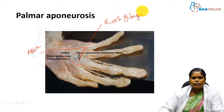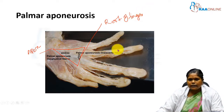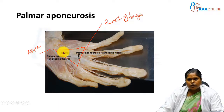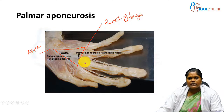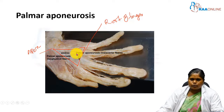Here we can see the palmar aponeurosis along with the long flexor tendons coming from the forearm. The palmar aponeurosis covers these long flexor tendons, and the digital nerves and vessels arise from here — all those structures are covered by the palmar aponeurosis.